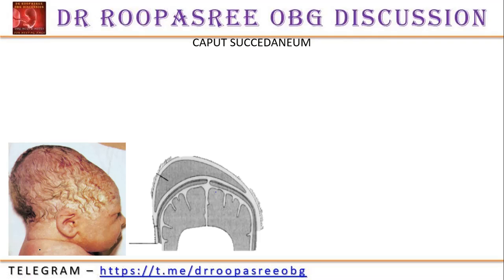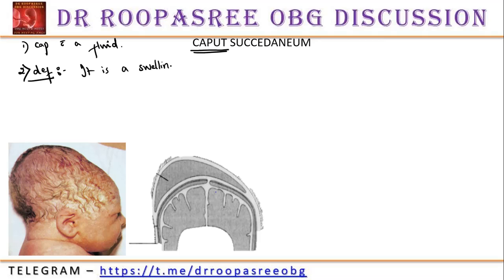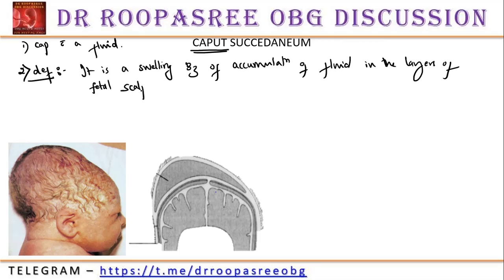Next is caput succedaneum. When you are working in hospitals as a house surgeon, you will see it at the time of birth of the baby. What is this caput? It is just a cap with fluid — the baby is born with a cap with fluid. It is a swelling because of accumulation of fluid in the layers of the fetal scalp. Why is this swelling and elongation present? Why is this fluid accumulating?